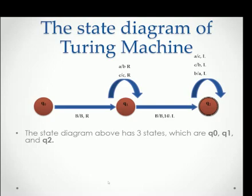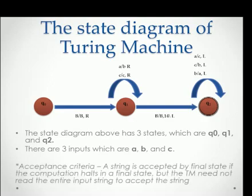The state diagram above has three states, which are Q0, Q1, and Q2. There are three types of input, which are A, B, and C.